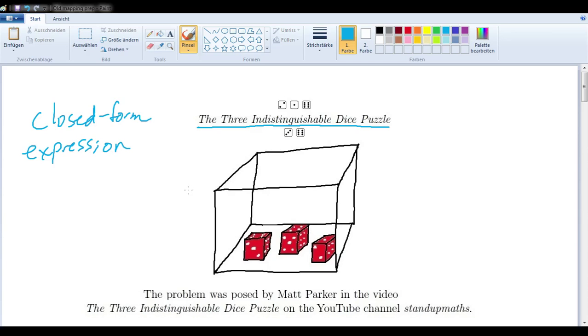But first we should talk about what the question is. This was a problem posed by Matt Parker of the YouTube channel Stand Up Maths. It's about three indistinguishable dice enclosed within a larger sealed transparent die, so that when we roll this larger die, these three indistinguishable dice are also rolled.